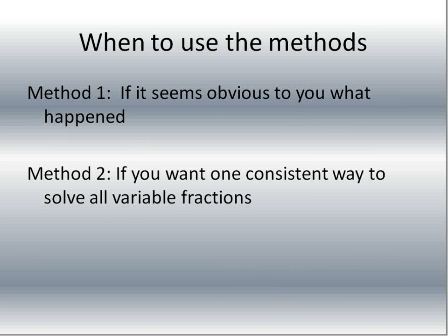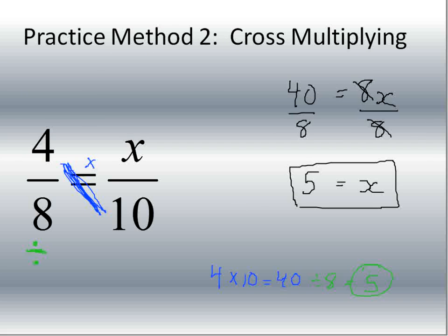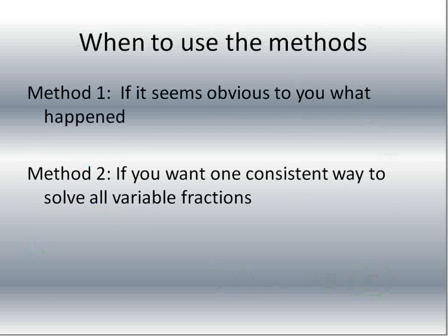When should you use each method? Method one — 'what happened' — if it seems obvious to you what happened and you can figure it out pretty quickly, use it: what did I multiply times the denominator, what did I multiply times the numerator? If you want one consistent way to solve all variable fractions, use cross-multiplying. You'll never have to worry about figuring out what's obvious. Cross-multiplying works every time, and it's nice to have one method that always works.